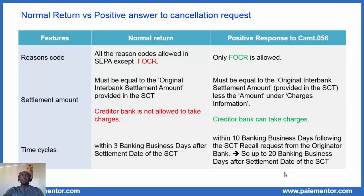The last specificity is regarding the time cycles. A normal return must be sent within three banking business days after the settlement date of the credit transfer. A positive response to recall can be sent up to 10 banking business days following the SCT recall request from the originator bank. Since the recall message itself can be sent up to 10 banking business days after settlement of the SCT, the positive response to recall can then be sent up to 20 banking business days after the SEPA credit transfer.